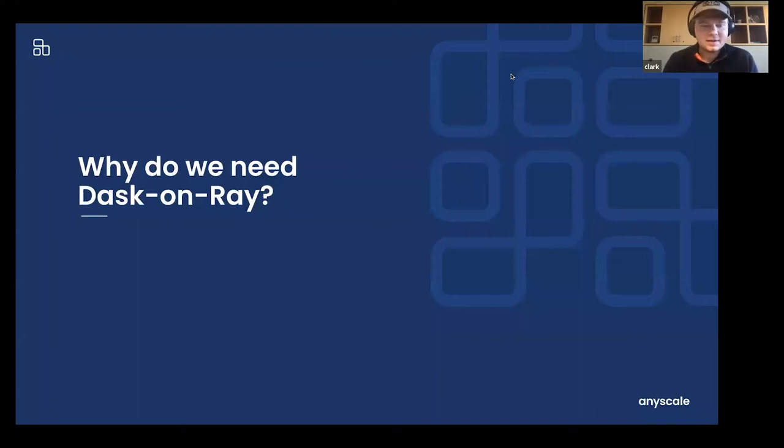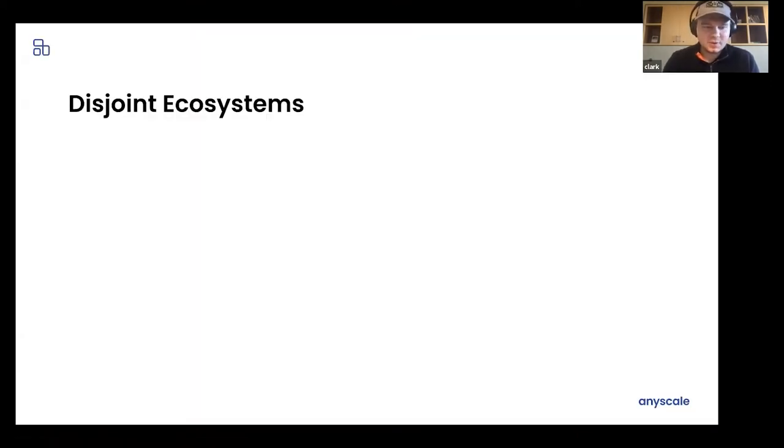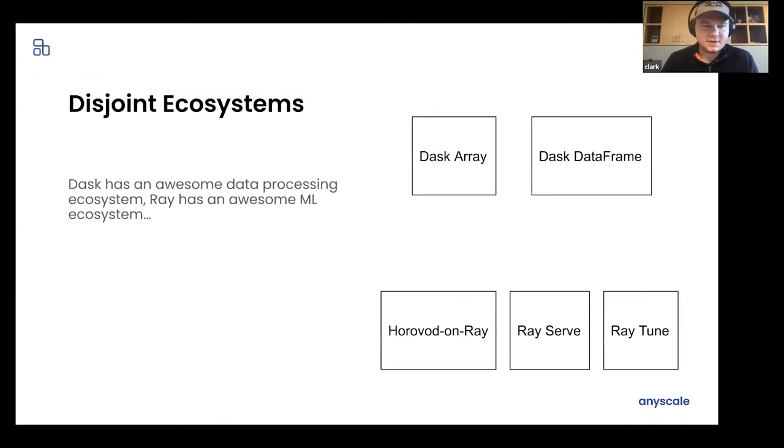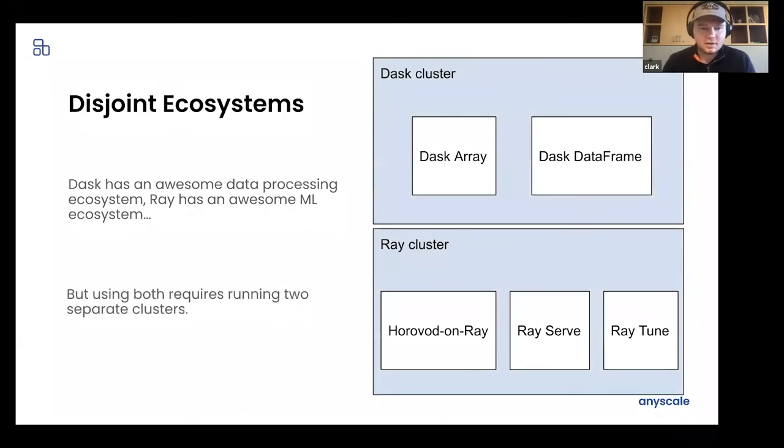So why do we need Dask on Ray? Why even do this? What problem are we actually solving? I see it as two big problems. Number one, we have two disjoint ecosystems. Dask has awesome data processing stuff. Ray has some awesome machine learning stuff. Both ecosystems continue to grow. But unfortunately, as a user, if you want to use both stuff from the Dask ecosystem and the Ray ecosystem, you have to run two separate clusters, which is a huge operational burden. And it's also a point of inefficiency when you have to transfer data from one cluster to the other, for example when going from data pre-processing to model training, which is no fun. Nobody wants to do that.